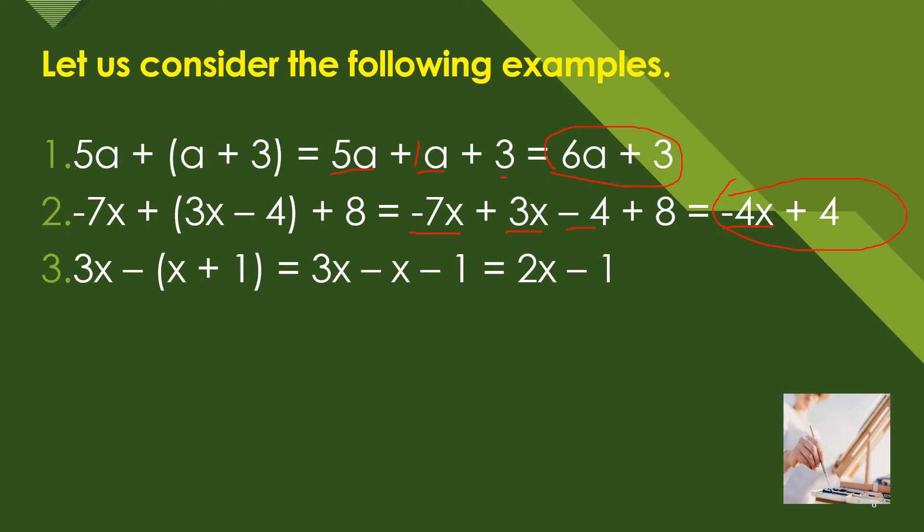Next we have 3x minus (x + 1). So 3x, and then we have negative times positive equals negative, so negative 1. Then combine 3 minus 1, so we have 2, and then copy -1. That's why we have 2x minus 1.